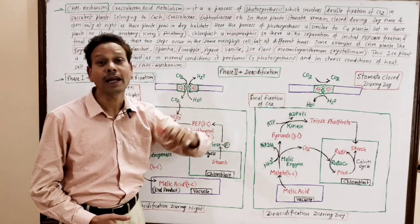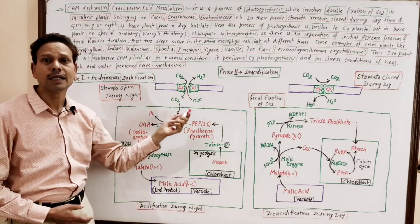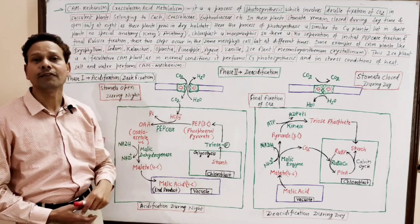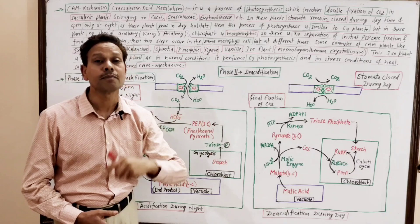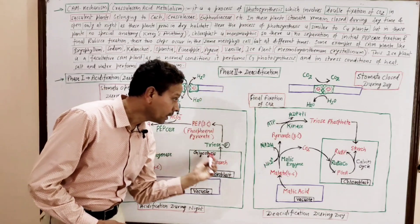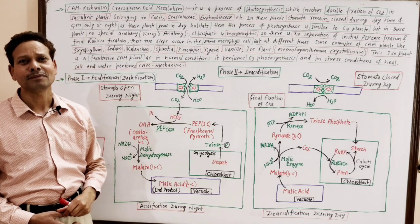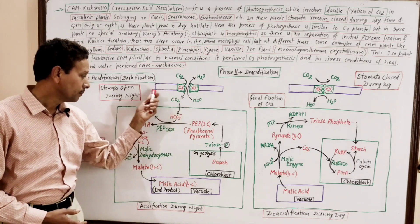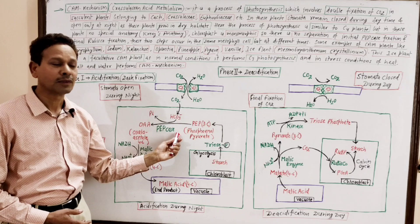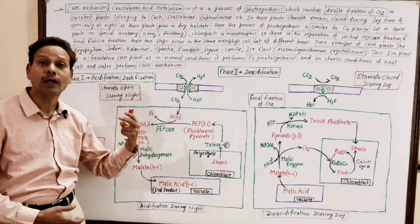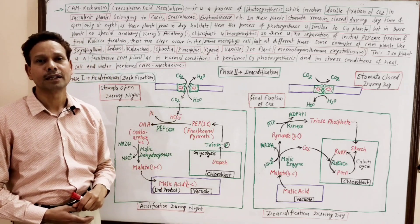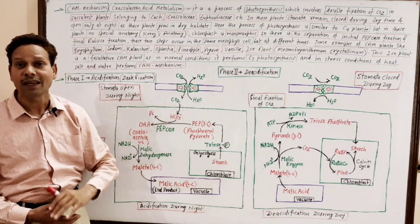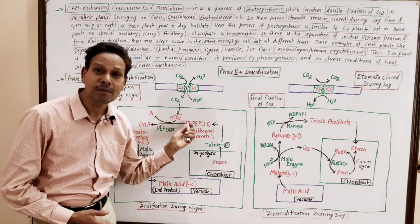The double fixation occurs during daytime and during nighttime. The process which occurs during night is acidification — the formation of acid, particularly malic acid. In this CAM mechanism, which resembles the C4 process, the initial fixation of CO2 produces a 4-carbon compound. That 4-carbon compound is oxaloacetic acid (OAA).